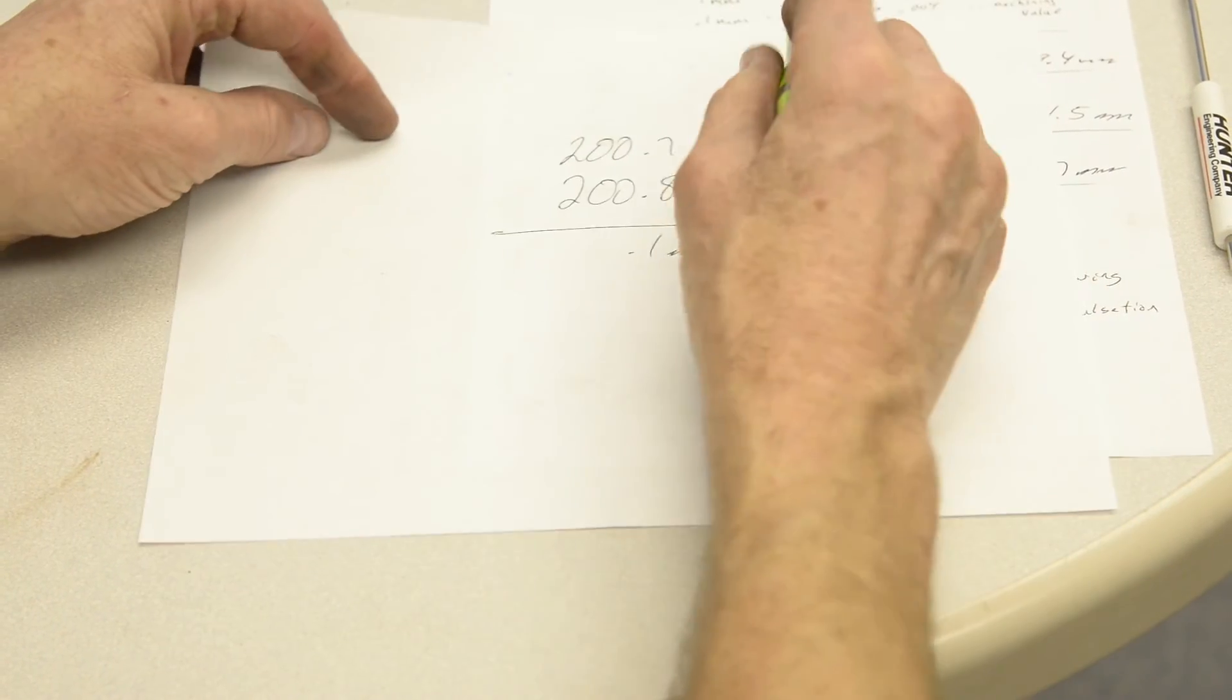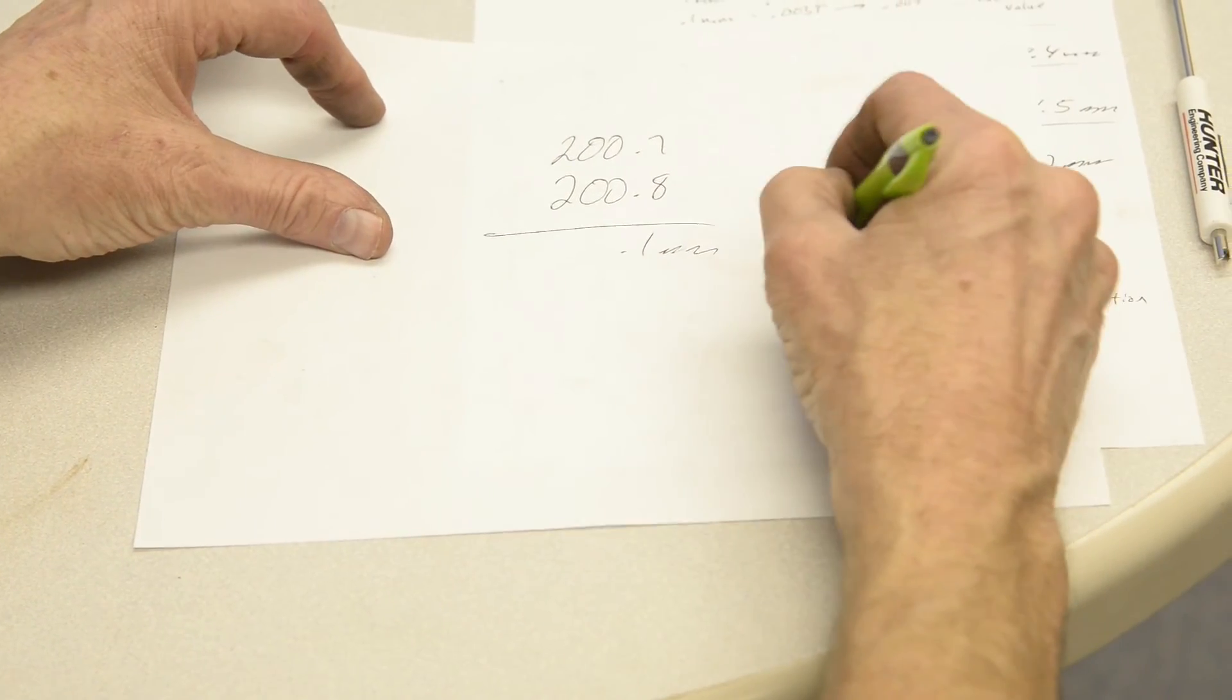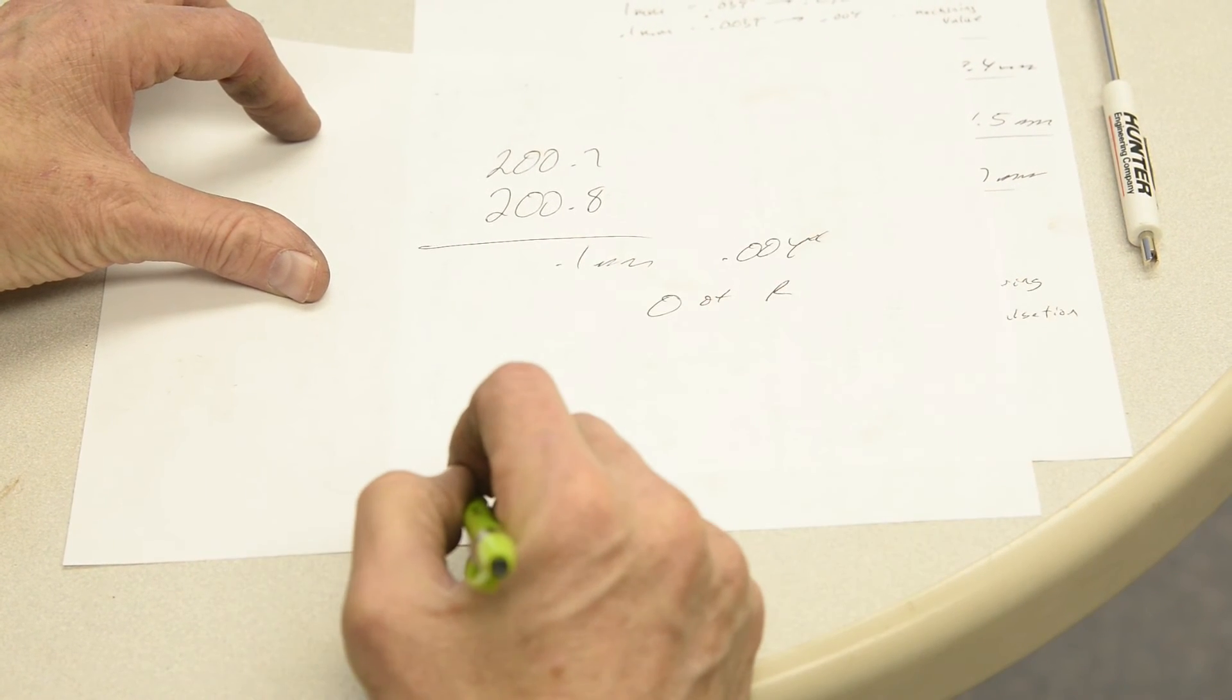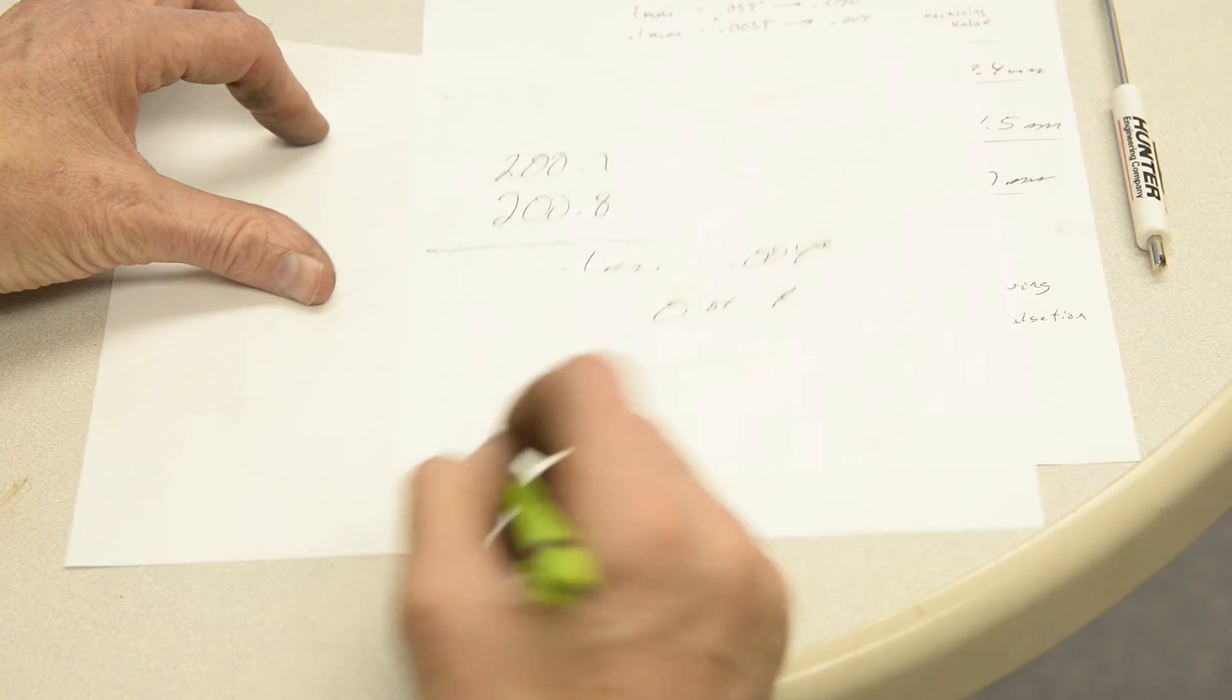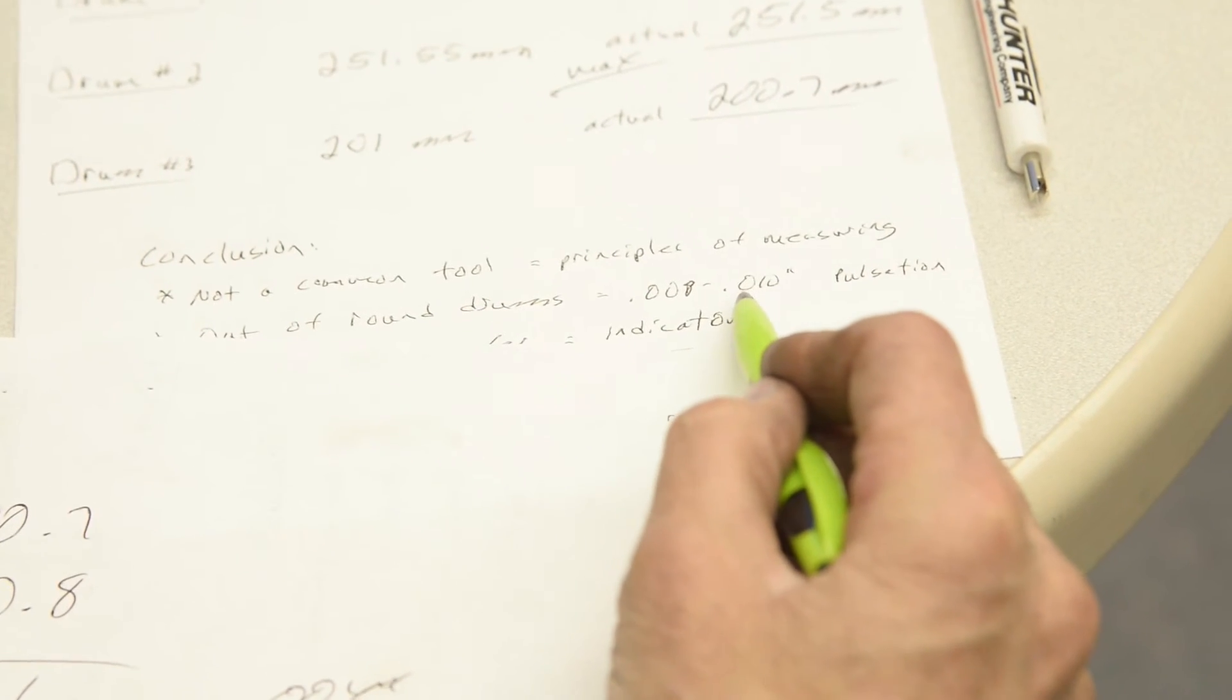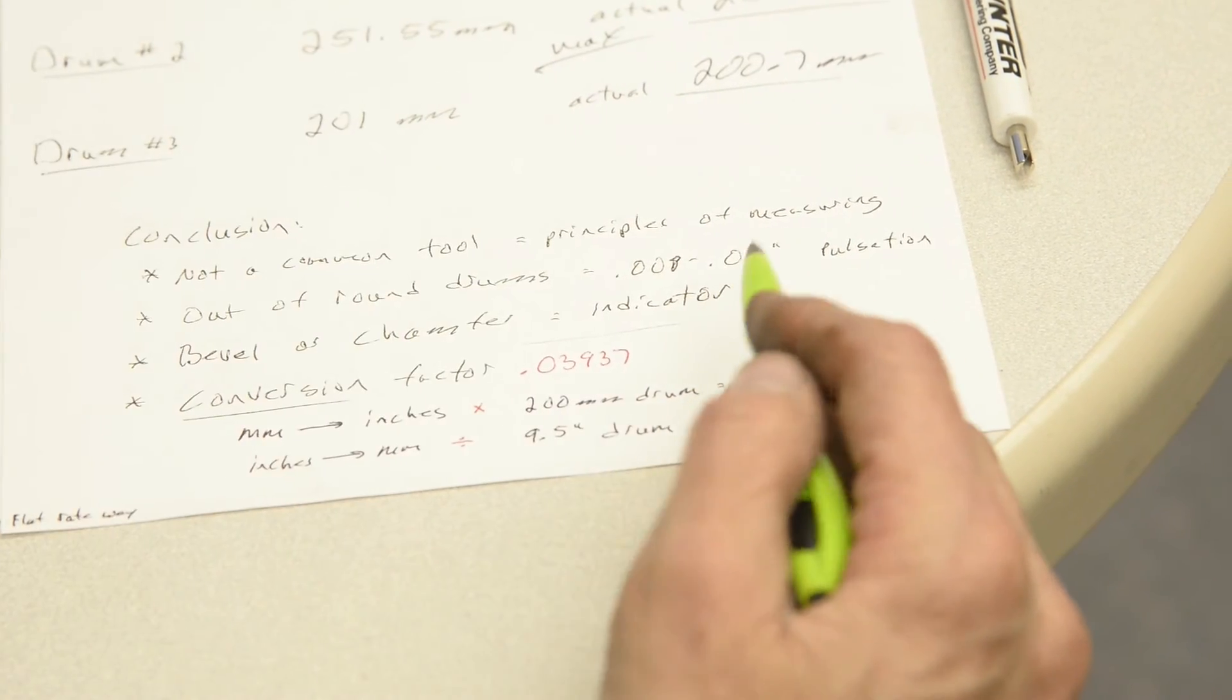Well 0.1 millimeter, we mentioned earlier, is about four thousandths of an inch out of round. That's not a serious issue. If we start getting above 8 or 10, that could cause a pulsation. That's the theory of it all.